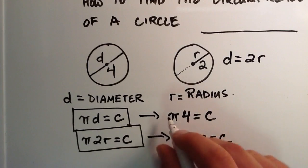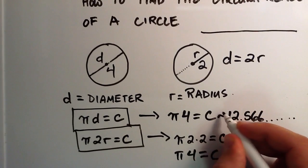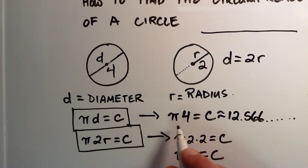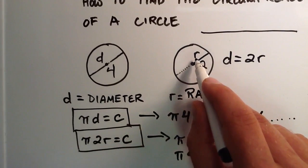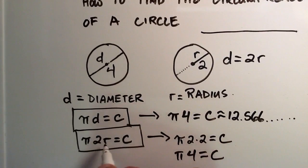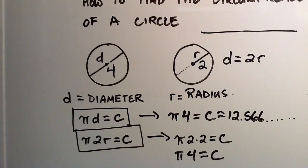Pi times 4 is approximately 12.566 and then a bunch of other numbers, if you wanted to get an approximate answer for what 4 times pi is. So that's basically it. If you want to find the distance around the outside of the circle and you're given the diameter, plug the diameter into the first equation. If you're given the radius, plug it into the second equation where r is. Either way, use the corresponding equation depending on which one you have and you'll be able to find the circumference of a circle. Thank you guys for watching — I'm going to do some more tutorial videos on circles, so stay tuned. Don't forget to subscribe.